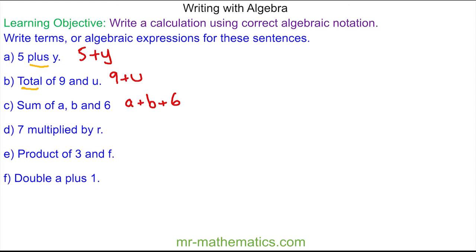For question d, we have 7 multiplied by r. But with algebra, we do not write the multiplication symbol because it can be confused with x, so we have 7r. We simply do not include the times.